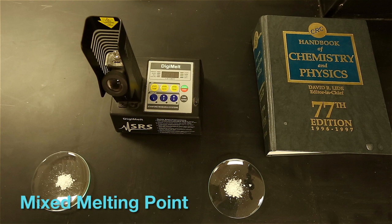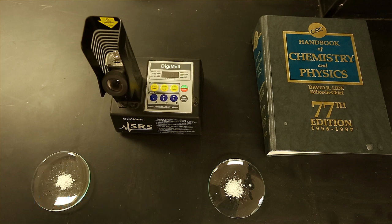When two compounds are mixed, the melting points should be the same if they are in fact the same compound. Conversely, if the samples are not identical, the value of the melting point should be depressed.